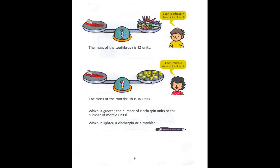Now here we change it up a little bit. We keep the toothbrush but we change it to marbles and now each marble stands for one unit. And we can see the toothbrush is just as heavy as 10 marbles. The mass of the toothbrush is 10 units.